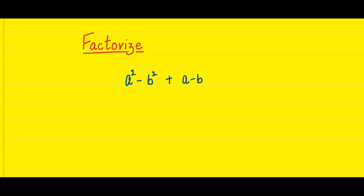We can see that a squared minus b squared is difference of squares. And we very well know that the difference of squares is equal to, or we can say it has two factors, a minus b into a plus b. So we are going to factorize the first two terms, which are difference of two squares, a squared minus b squared.